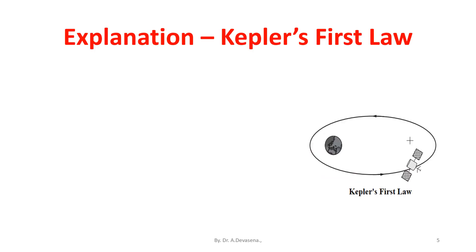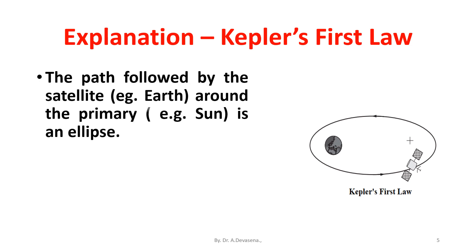Now, we see the explanation for Kepler's first law. The path followed by the satellite, for example, around the primary, the sun, is an ellipse. The ellipse have two focal points. The center of mass is always centered at one of the focal.